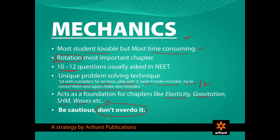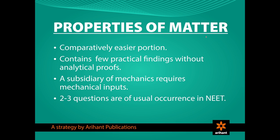The next portion is Properties of Matter. This portion is comparatively easier and has few practical findings without analytical proofs. For example, Elasticity of Iron is more than that of Rubber. Most of this part incorporates a mechanical input, i.e. this part is considered as the subsidiary of Mechanics. On an average, 2-3 questions are asked in NEET from this particular part.